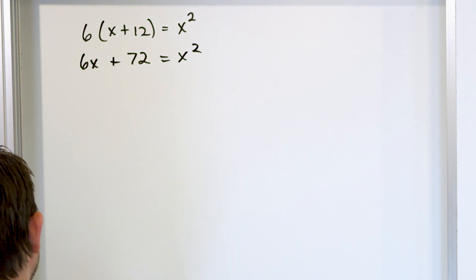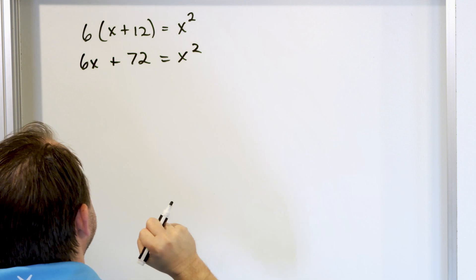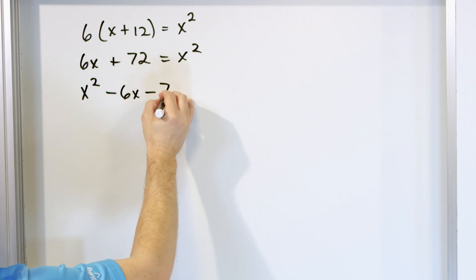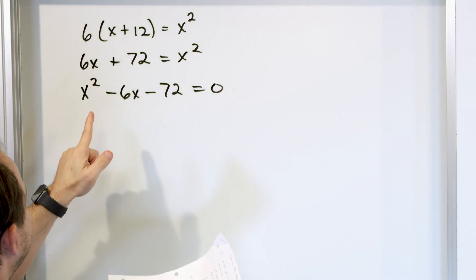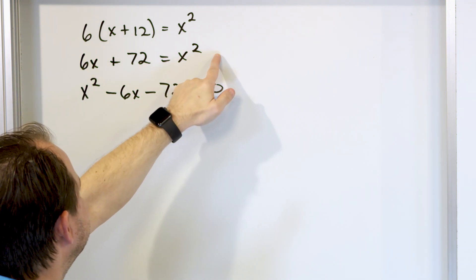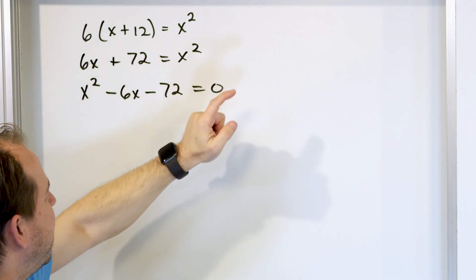So now that it's in this form, what I'm going to do is take these terms and grab them and move them to the other side by subtraction. So what I'll end up with is x² - 6x - 72 equals zero. Make sure you understand what I did here. I just said I'm going to subtract 6x. It's going to disappear from here, and it's going to come up as a minus 6x over there. I'll subtract this, so it'll disappear and come up as a minus 72 over there.